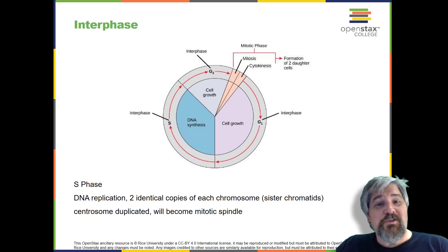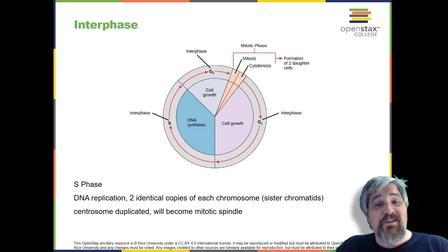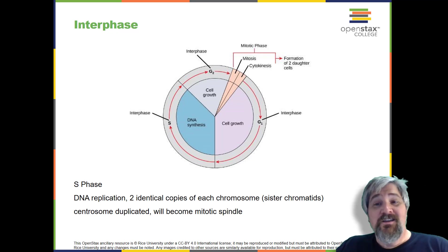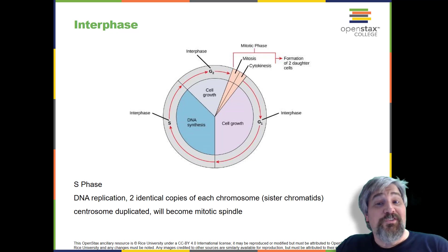S phase. Throughout interphase, nuclear DNA remains in a semi-condensed chromatin configuration. In the S phase, which is short for synthesis phase, DNA replication results in the formation of two identical copies of each chromosome, referred to as sister chromatids, that are firmly attached to the centromere region. Each chromosome is made of two sister chromatids and is a duplicated chromosome. The centrosome is also duplicated during the S phase. The two centrosomes will give rise to the mitotic spindle, the apparatus that orchestrates the movement of chromosomes during mitosis. The centrosome consists of a pair of rod-like centrioles at right angles to each other. Centrioles are not present in the centrosomes of many eukaryotic species, such as plants and most fungi.